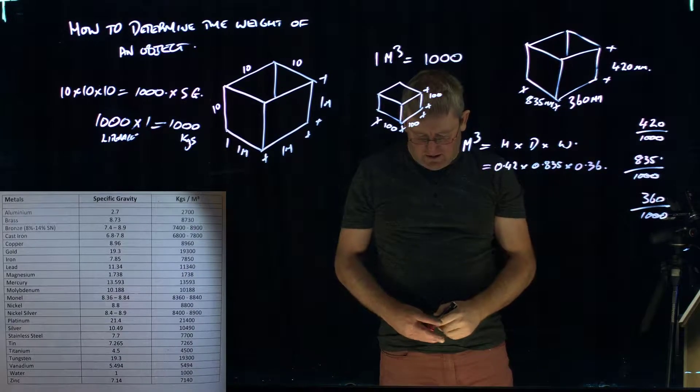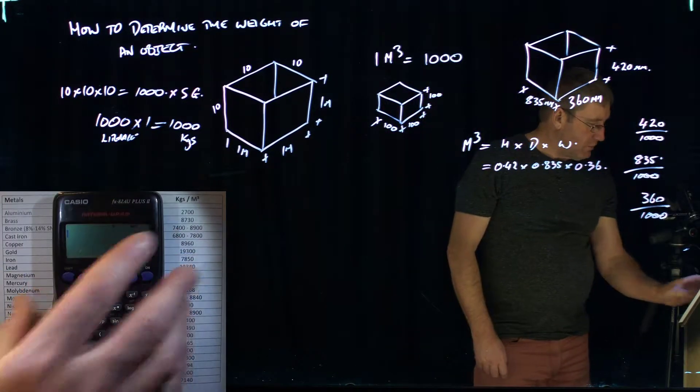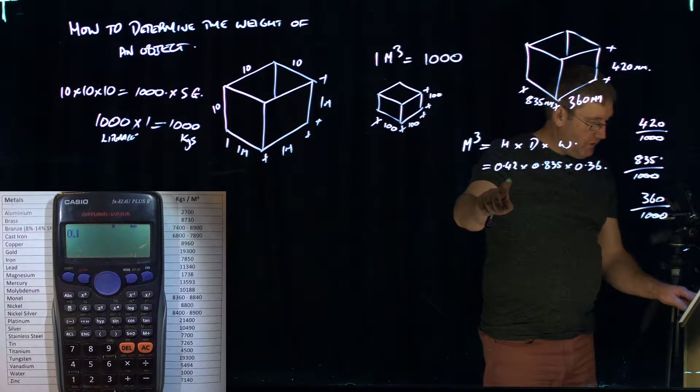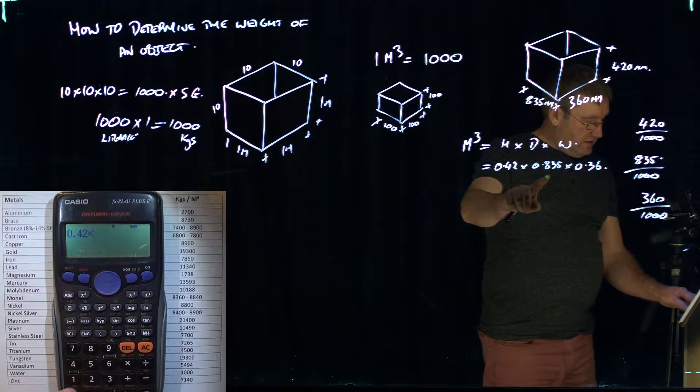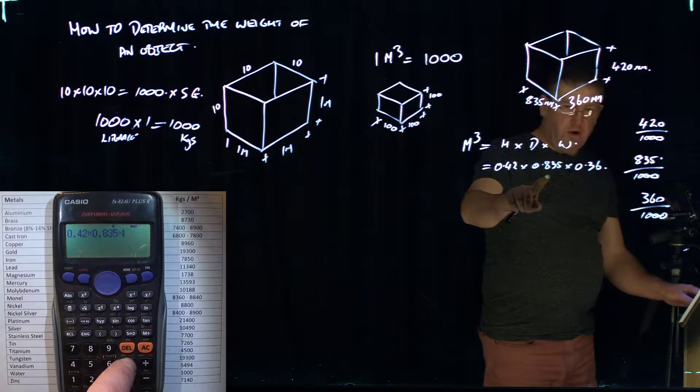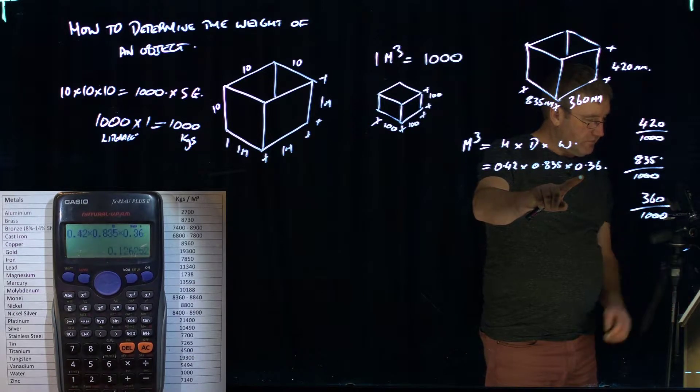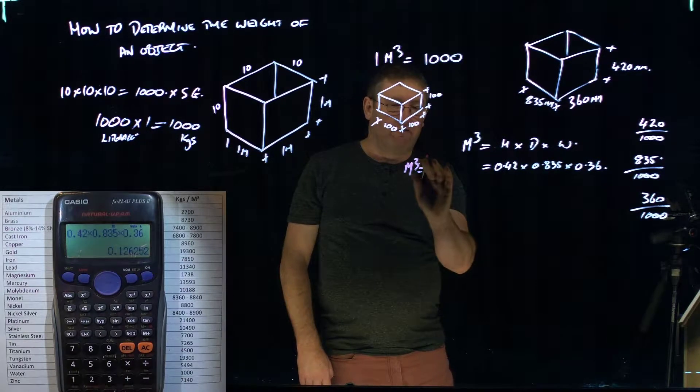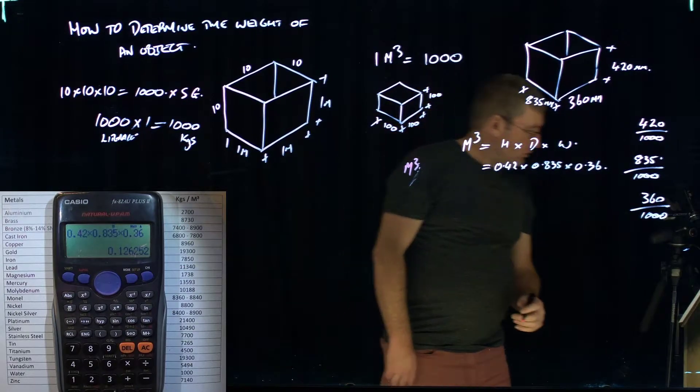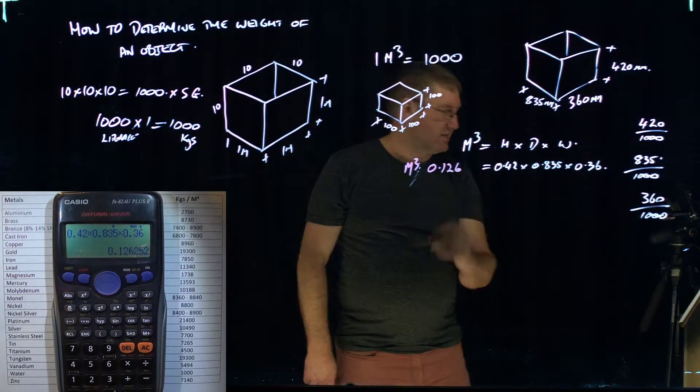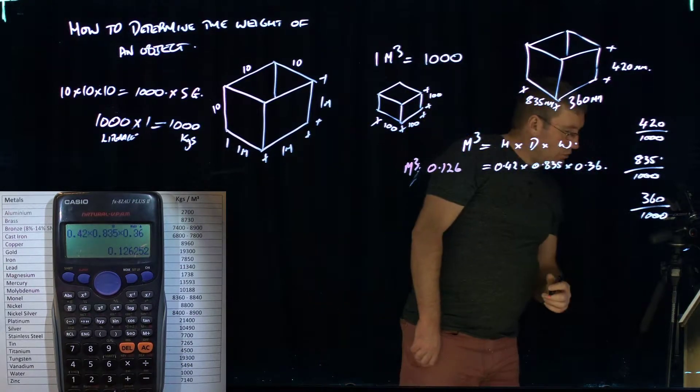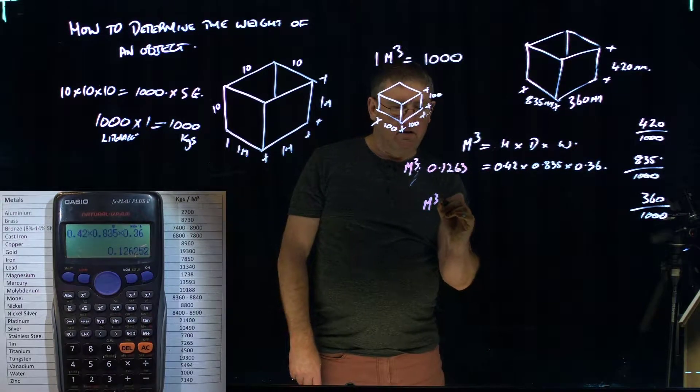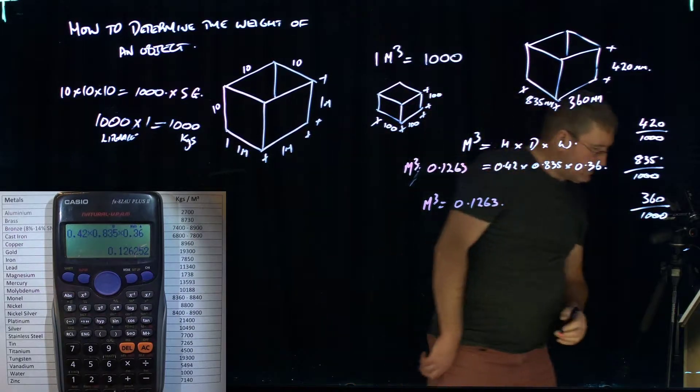And it's going to give us an answer in meters cubed. So it's 0.42 times 0.835 times 0.36. And that gives us a meters cubed of 0.1263.